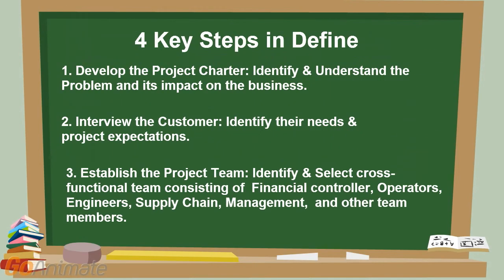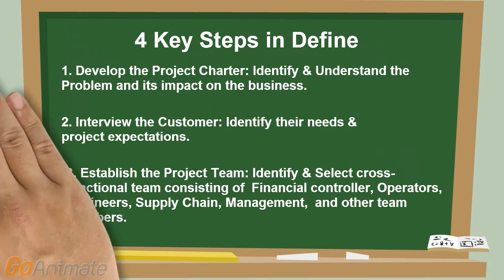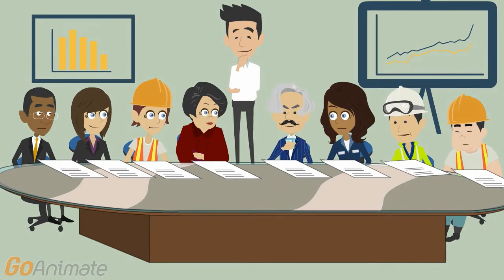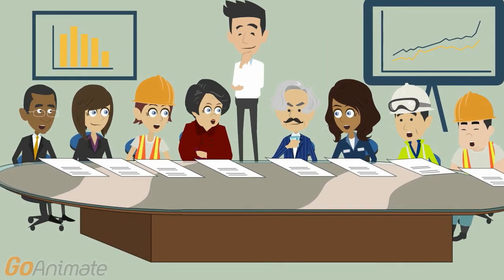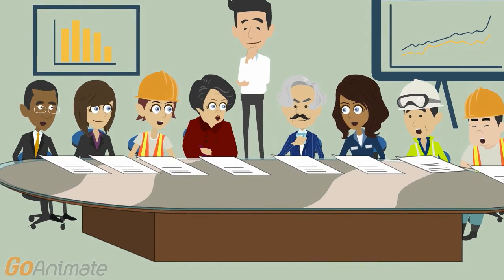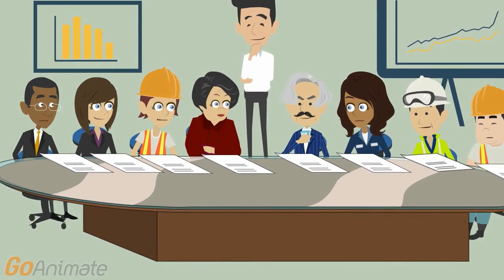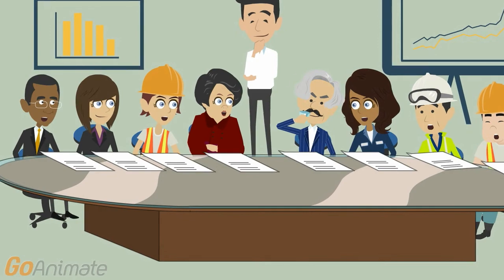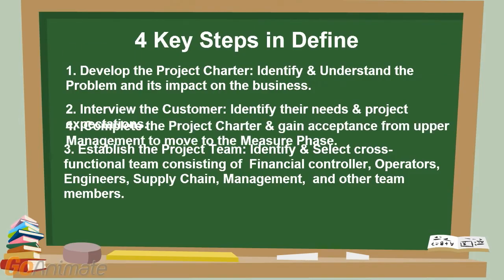Step 3: Establish the project team. Identify and select a cross-functional team consisting of a financial controller, operators, engineers, supply chain, management, and other team members. Team dynamics play a significant role in the success of any project. The team should be diverse in knowledge and experience — typically 8 to 10 members who are active participants.